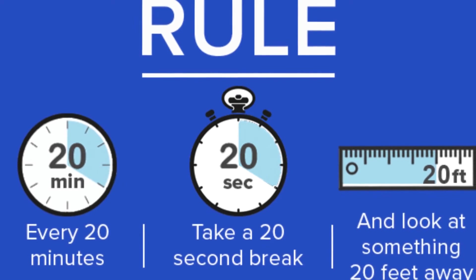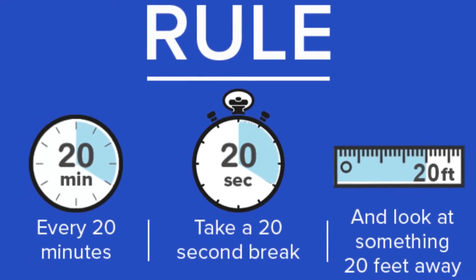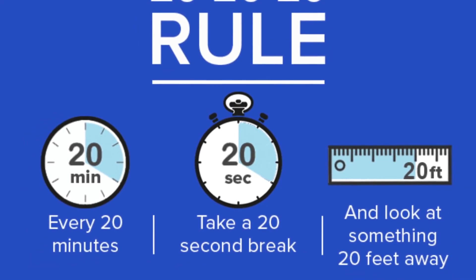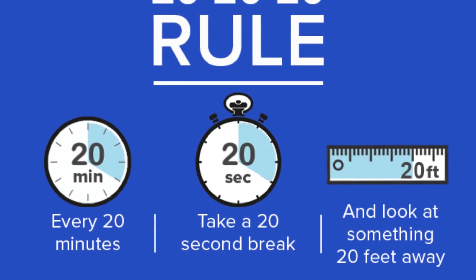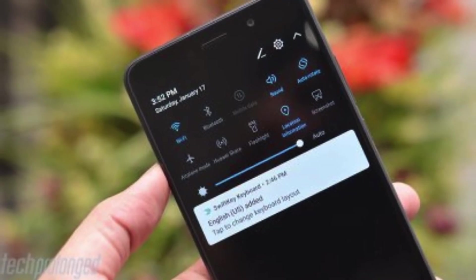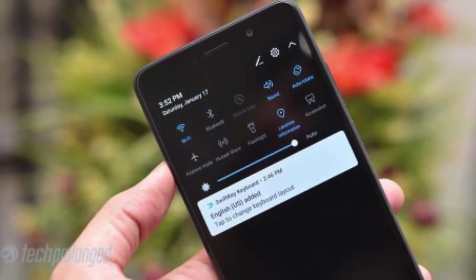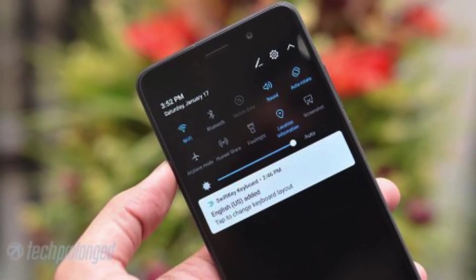To prevent eye strain, follow the 20-20-20 rule. Take a 20-second break every 20 minutes to gaze at something 20 feet away, letting your eyes refocus and relax. Reduce the brightness of your electronic gadgets to a comfortable level, avoiding overly harsh settings.